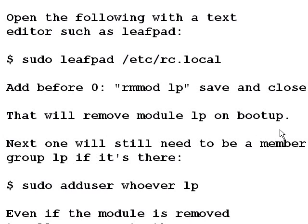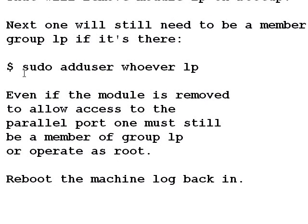Next, you will still need to be a member of group lp. Even if the module is not there, you have to be a member of lp. Type: sudo adduser [your username] lp, and press enter. Make sure you use sudo adduser with your username and lp so that you can be part of that group. Even if the module is not there, the group could still be there, so it is best to be part of it. It would also help to add yourself to root: sudo adduser [your username] root. With those saved, reboot the machine and log back in.